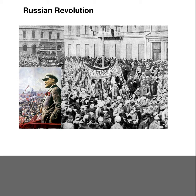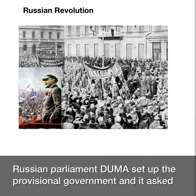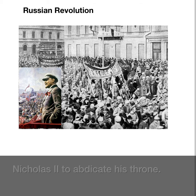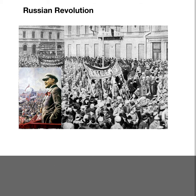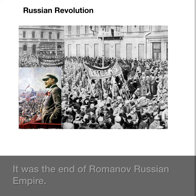The Russian parliament, the Duma, set up the Provisional Government and asked Nicholas II to abdicate his throne. It was the end of the Romanov Russian Empire.